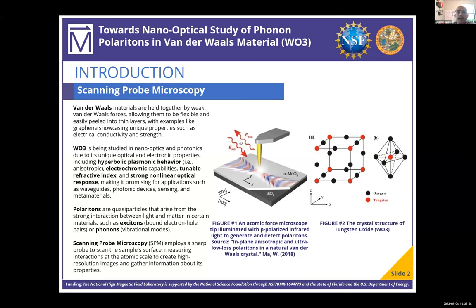These phonons are vibrational modes, which will help us learn about the thermal and mechanical properties of these materials. We are using scanning probe microscopy, which utilizes a sharp probe to scan the surface of a sample measuring interactions at an atomic scale, producing high-quality images to help us gather more information. The figures show an example of how one of these microscopy techniques works, such as the atomic force microscope, shooting infrared light onto a material to generate polaritons and revealing the crystal lattice of the material.